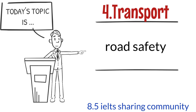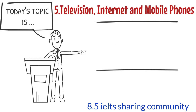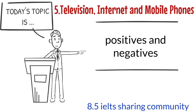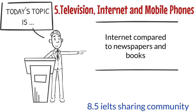Topic 5: Road Safety. Topic 5: Television, Internet and Mobile Phones, covering Positives and Negatives, and Internet compared to Newspapers and Books.